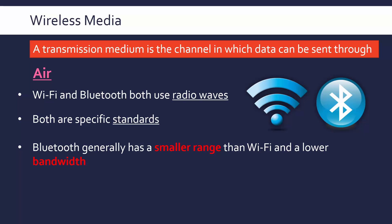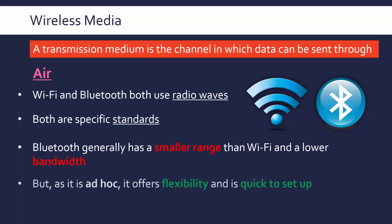Bluetooth is used for personal devices like wireless headphones and smartwatches. There's nothing inherently special about Bluetooth — it's just a standard that has become widely supported. It does have lower bandwidth than Wi-Fi generally, but one advantage is that Bluetooth is ad-hoc: you can set it up very quickly and easily, just toggling it on and off on your phone, which is far more flexible than configuring a Wi-Fi network.